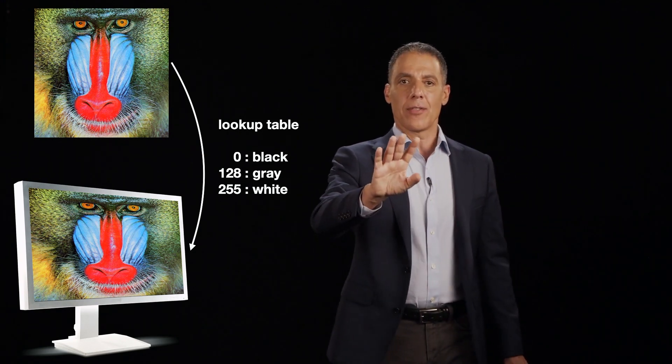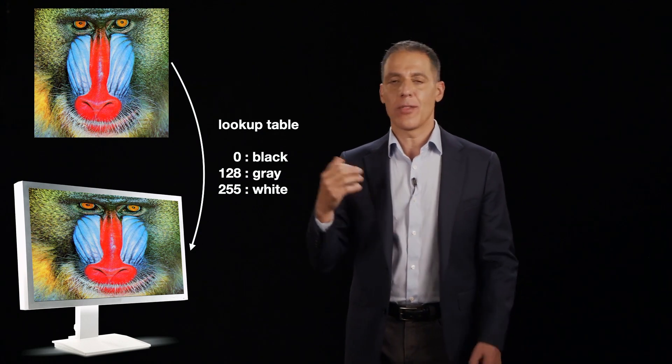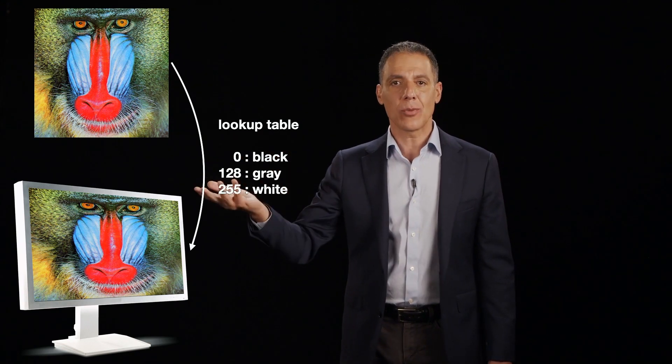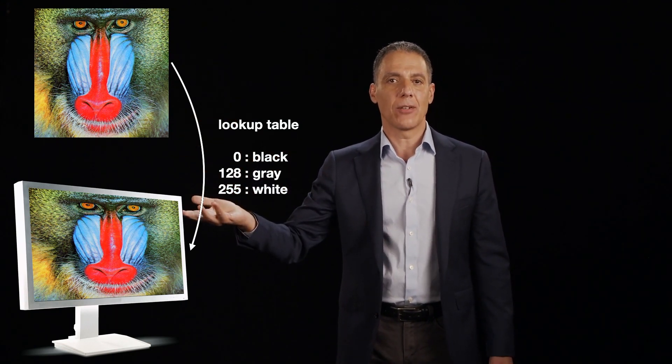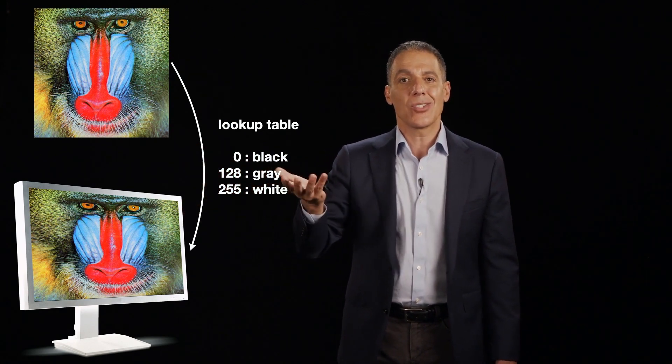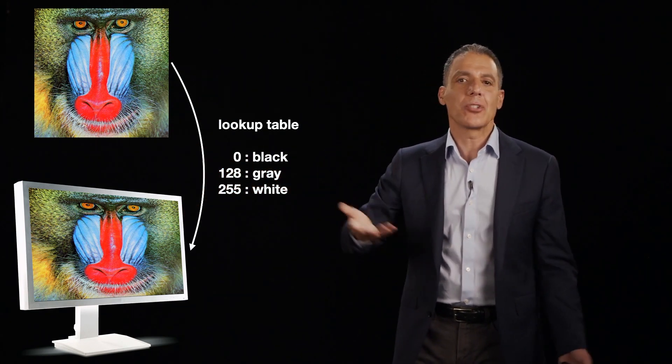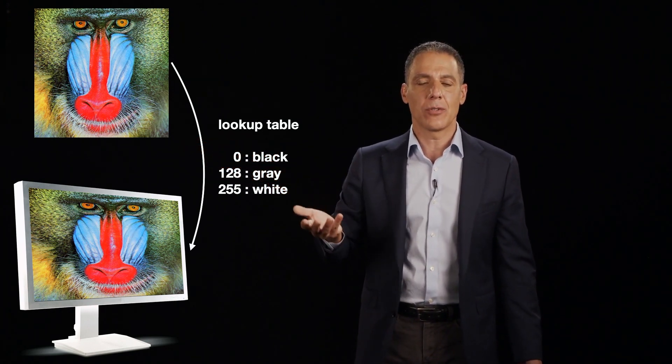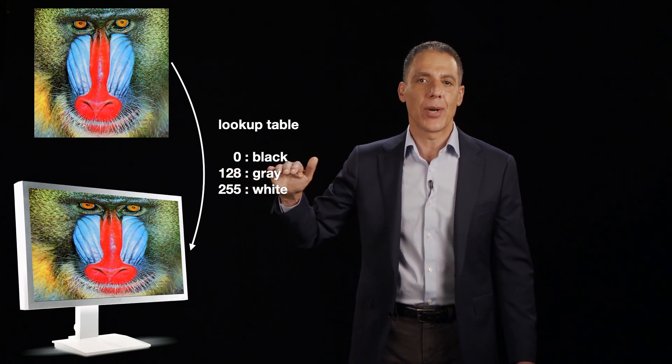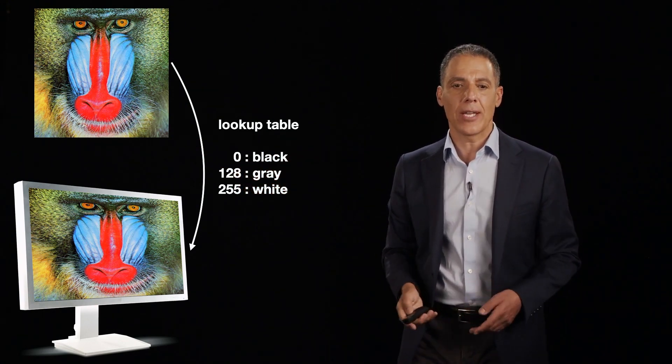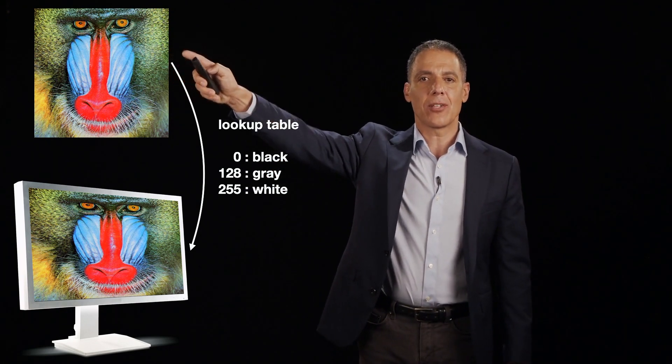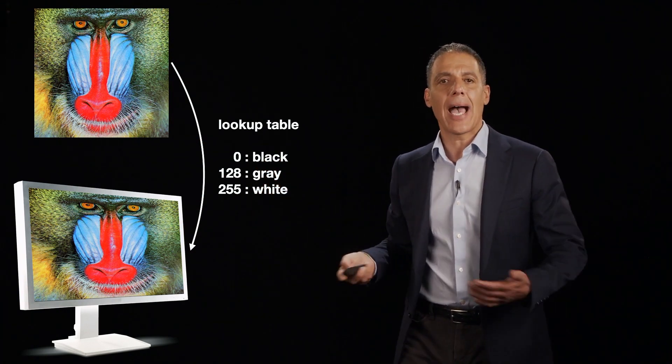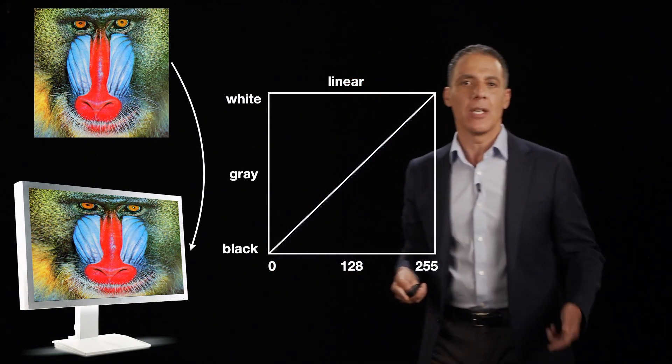Every display, the one that I'm staring at right now, the one that you're staring at right now, whether it's your phone, your tablet, or your desktop computer, has to convert some pixel representation, let's say an 8-bit grayscale value, or an 8-bit RGB value, into a brightness. And so the most typical mapping is something simple, like a value of zero goes to black, a value of 255 goes to white, and a value of mid-level gray, 128, is rendered as gray.